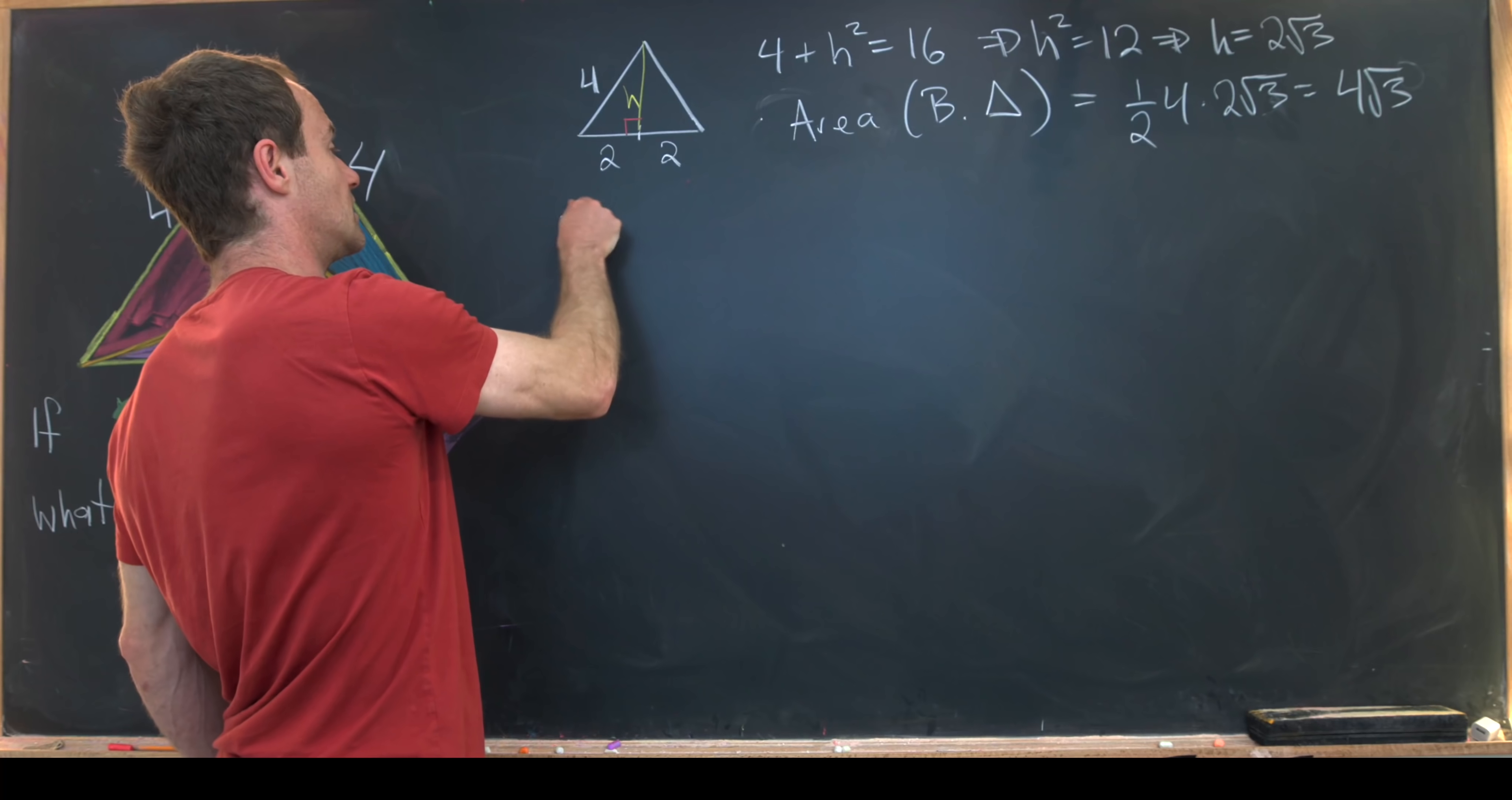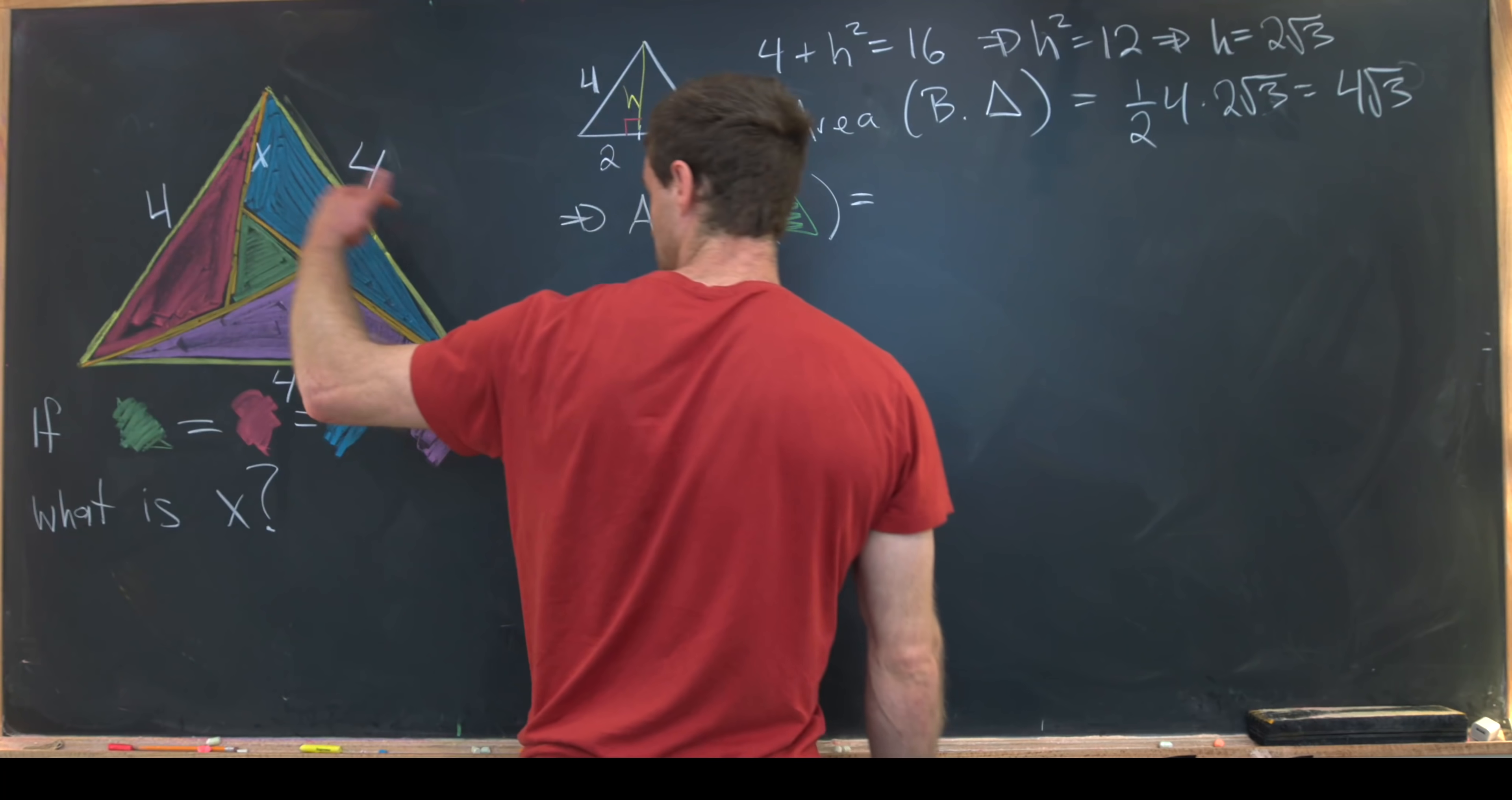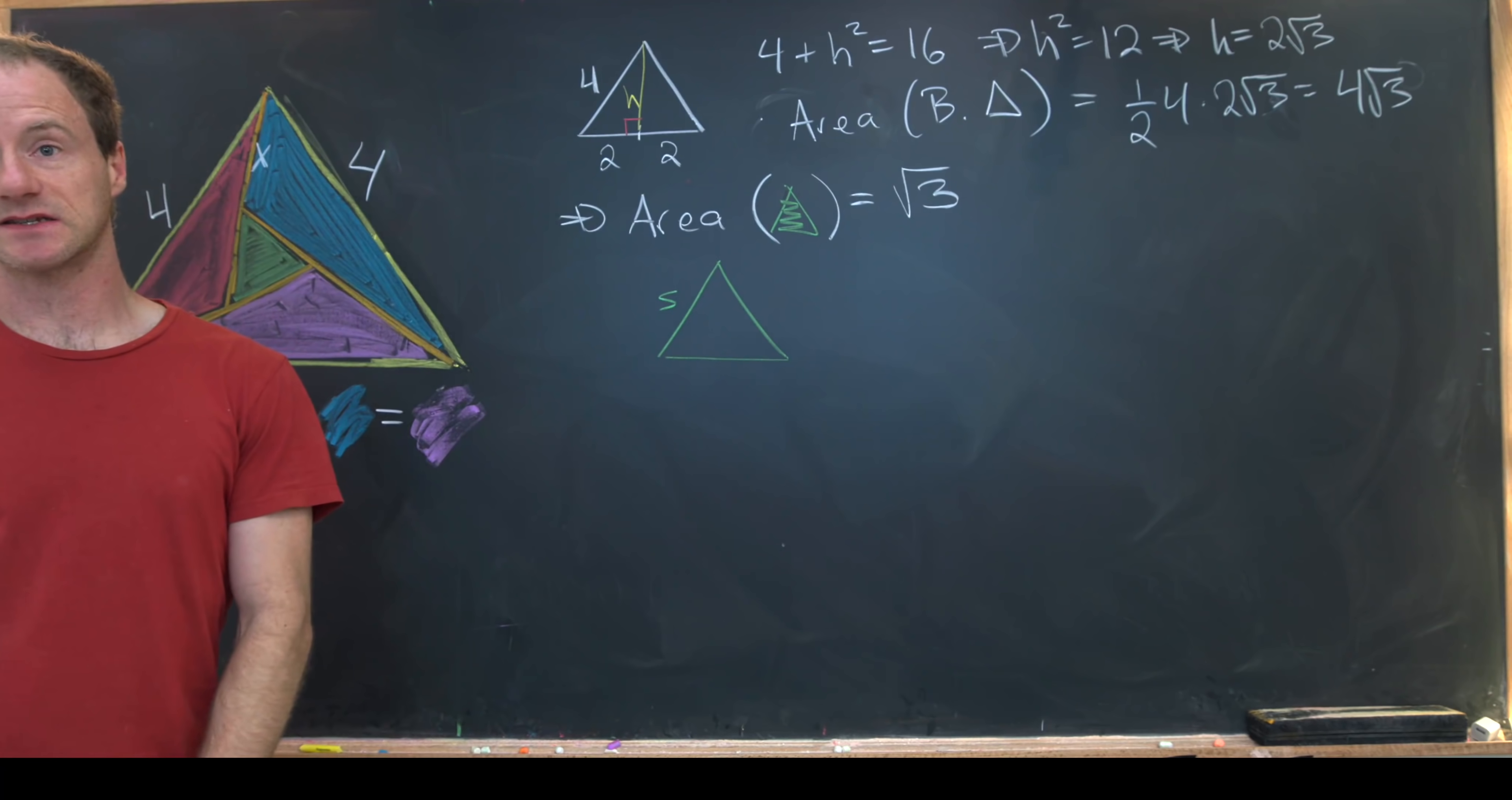But it follows that the area of the green triangle in the middle will be 1 quarter the area of the big triangle. So that's pretty obvious just by our discussion earlier. So that means the area of the green triangle is the square root of 3. Okay, so now let's see if we can use that to find the side length of the green triangle. So I'll draw a green triangle here. Let's say it has side length s.